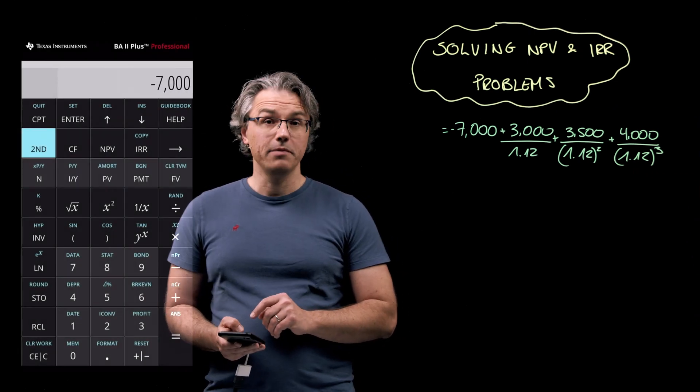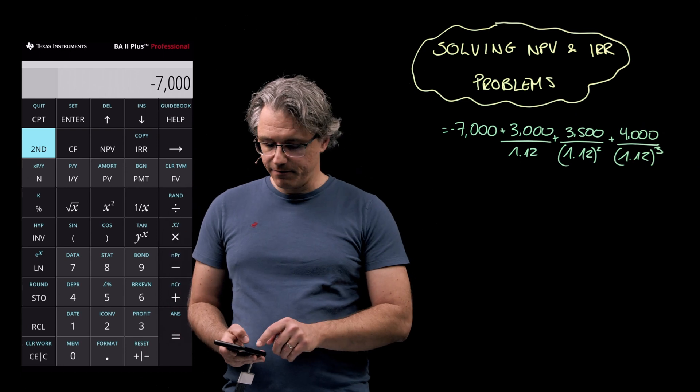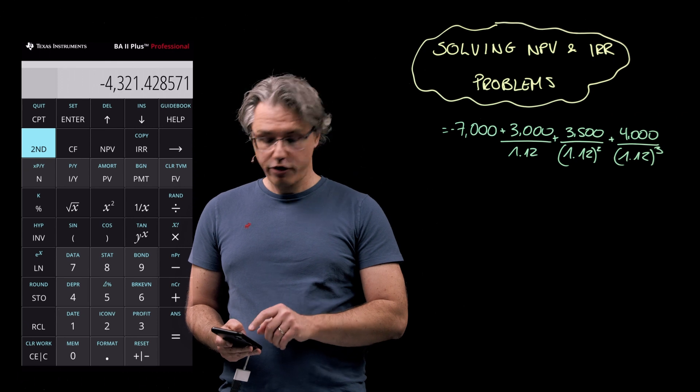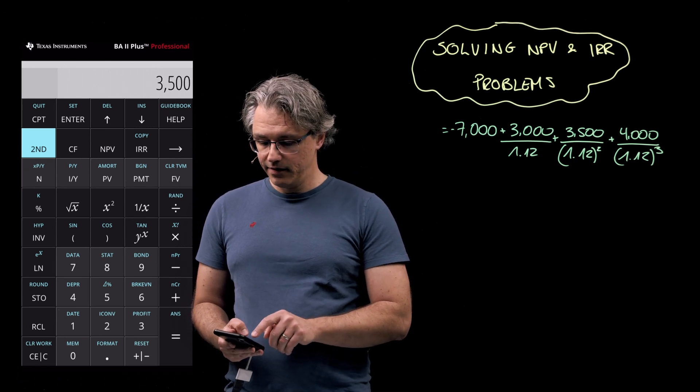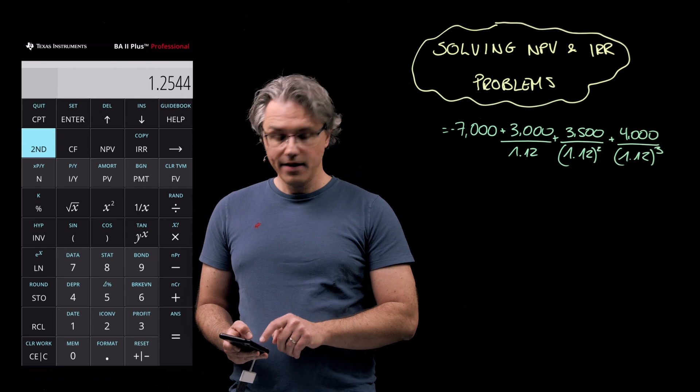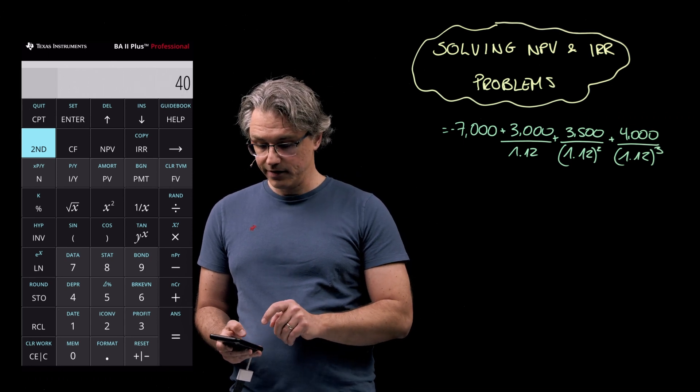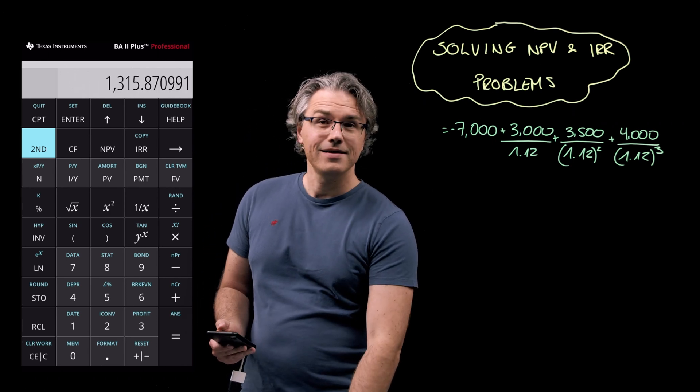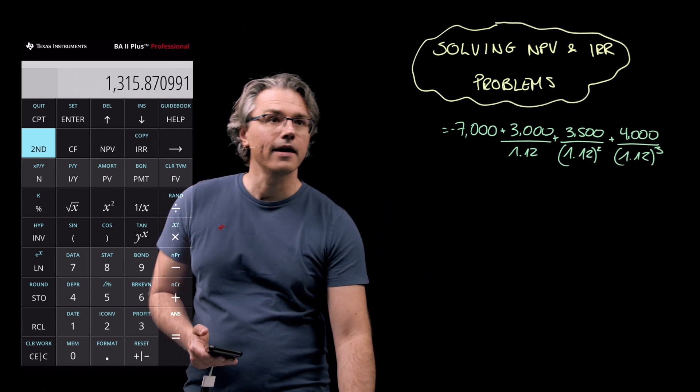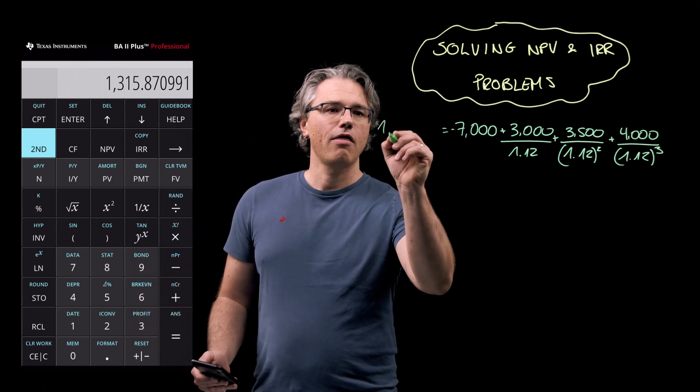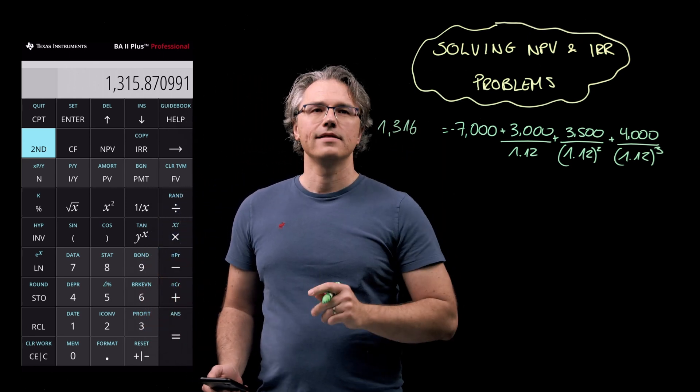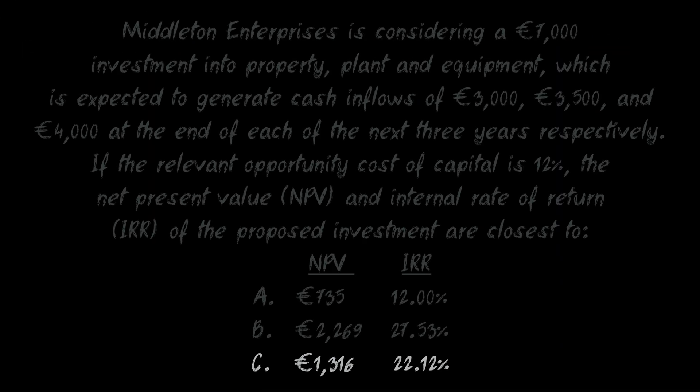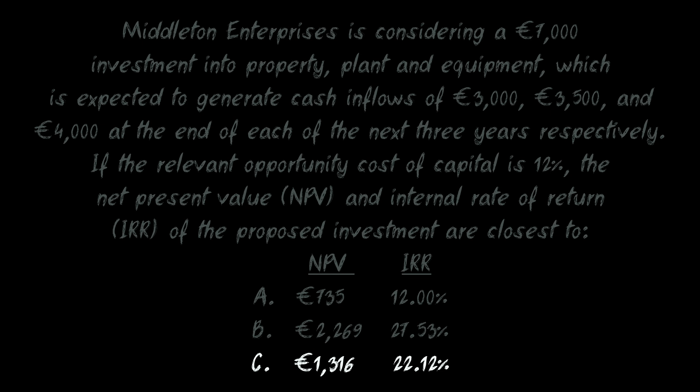7,000 followed by the plus minus sign to make it negative plus 3,000 divided by 1.12 plus 3,500 divided by 1.12 squared and 4,000 divided by 1.12 to the power of 3. And I can see the result coming in at roughly 1,316, which if we inspect the possible solutions to this problem suggests answer C.